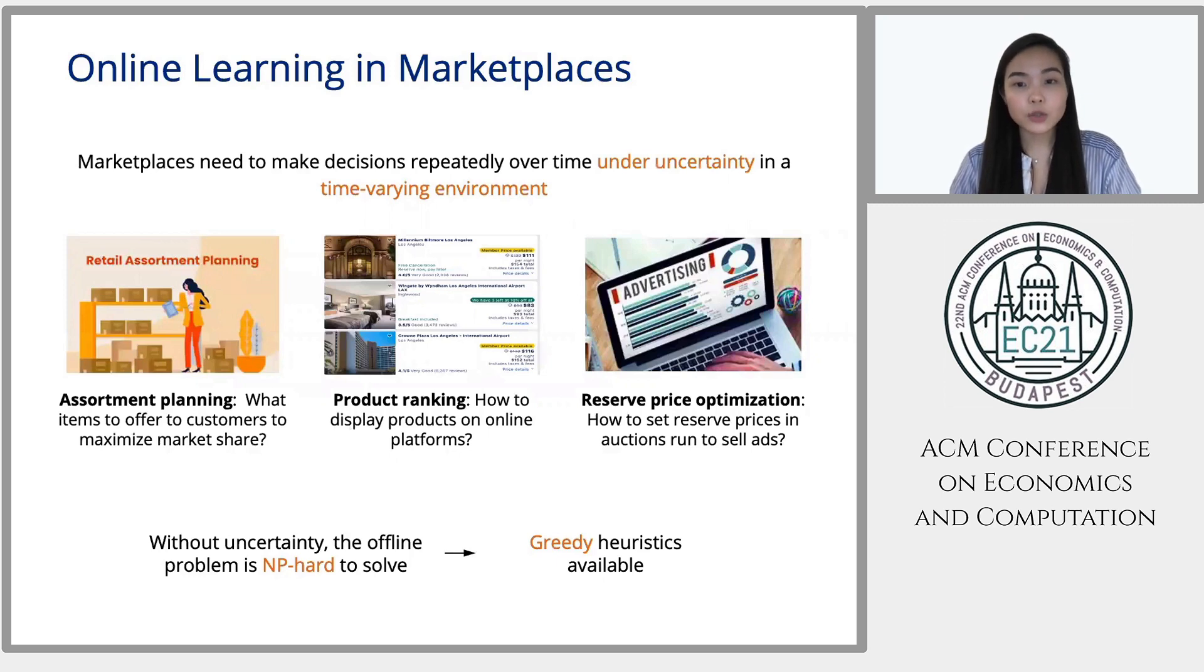We see a similar issue in the product ranking problem, where we want to show the most relevant products to customers, but customers have limited patience and attention. They usually only look at the products on the first few pages, or even only look at the top few products on the first page. So how can a platform display products to maximize the chance that customer finds something that they like? Here, customers' demand and preferences are also unknown and changing over time.